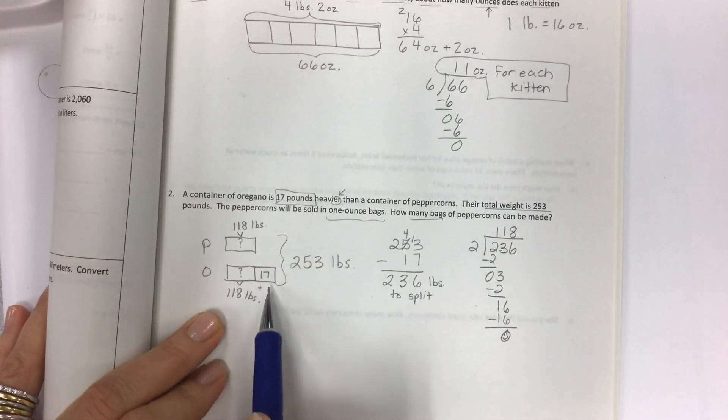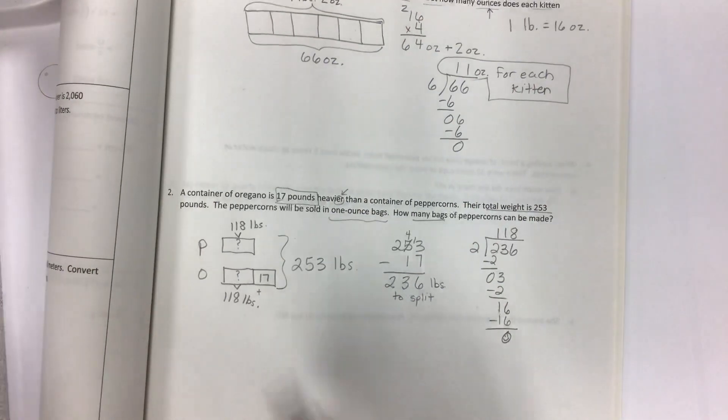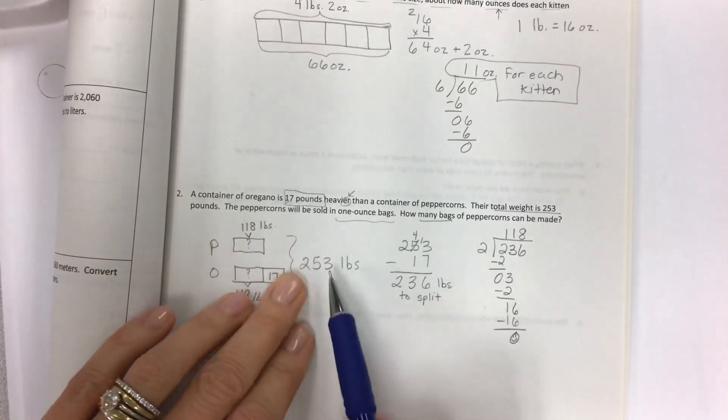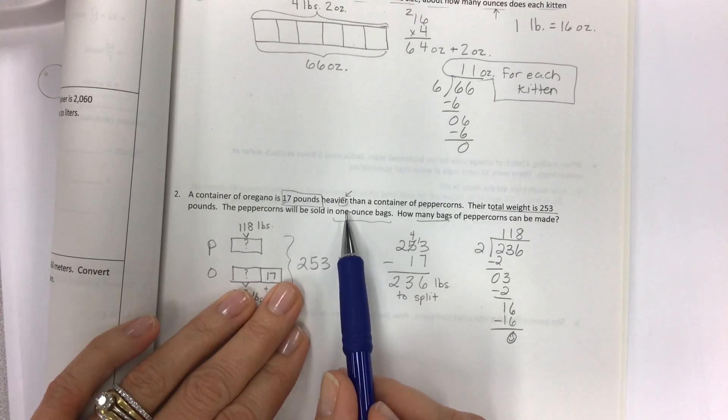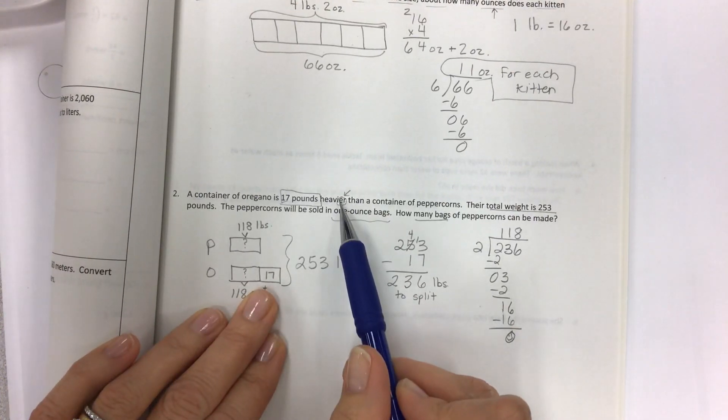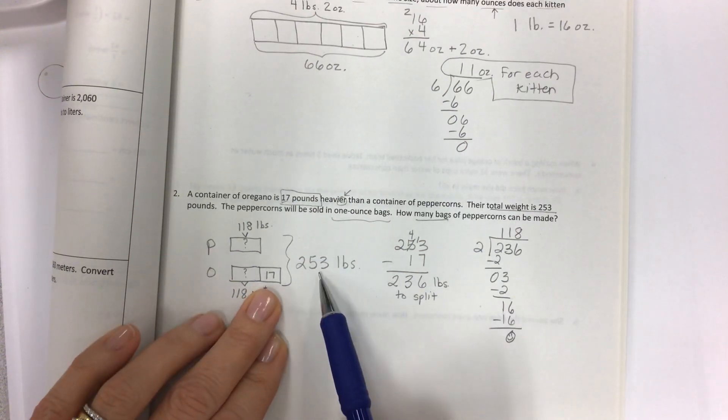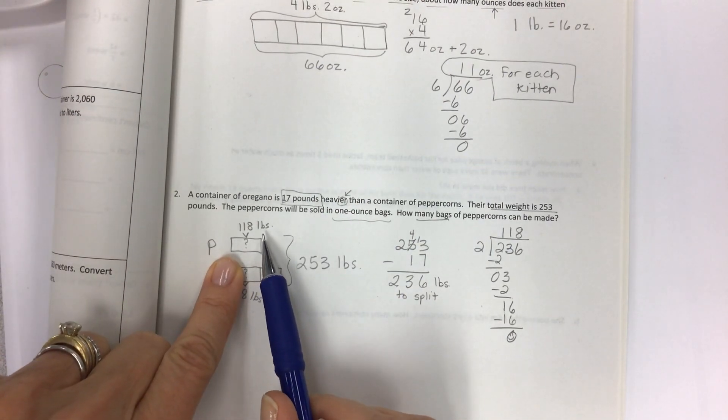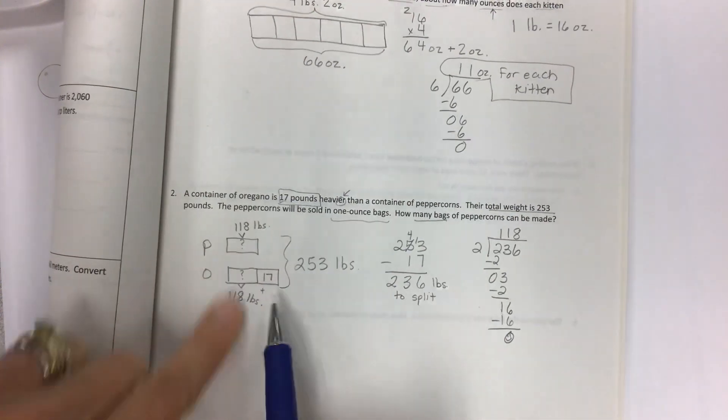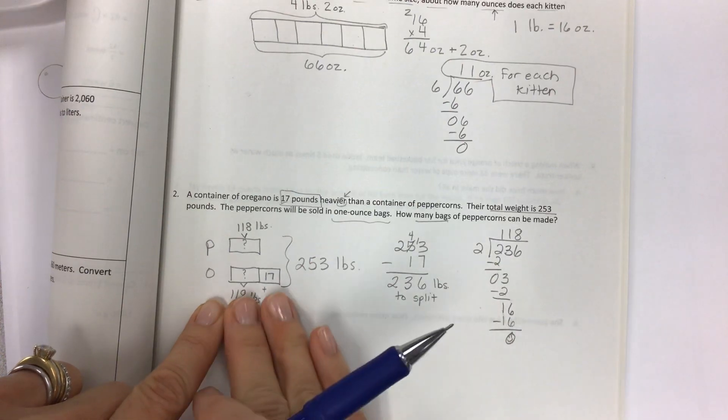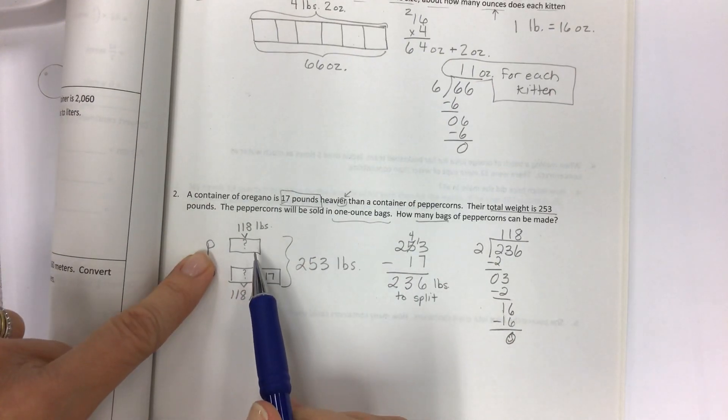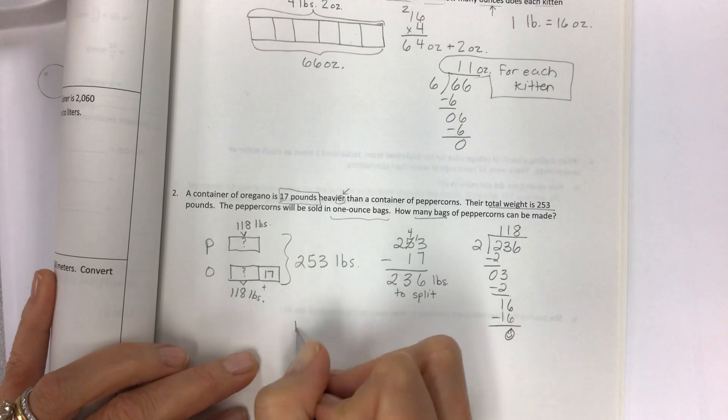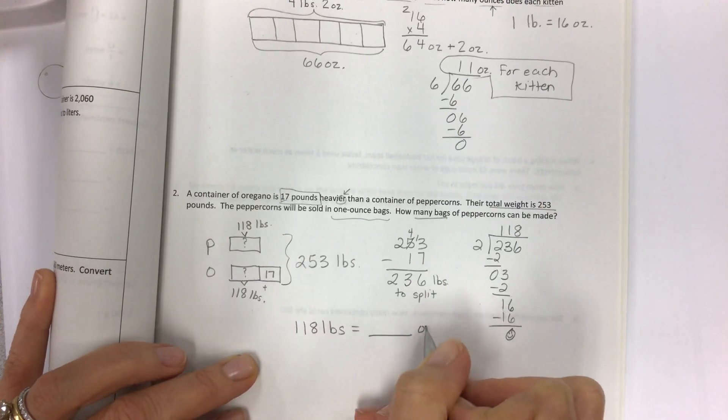Now I still don't have the total of the oregano, but I can figure that out if anything needed to be asked about how much is the oregano. Notice that I go back and I reread these multiple times when I'm doing word problems. 17 pounds heavier, got it. Total weight is 253, got it. Peppercorns will be sold in one ounce bags. Now I need to figure out about the peppercorns. So I have 118 pounds of peppercorns. The amount of oregano is now irrelevant. So I don't need to do any more work with the oregano. I'm just going to focus on the peppercorns.